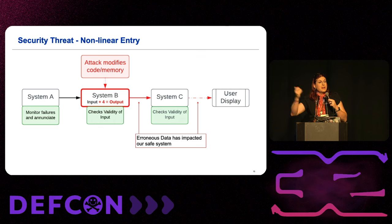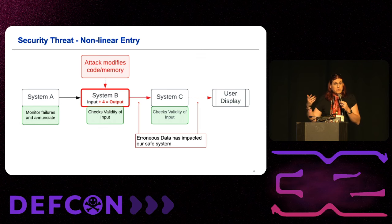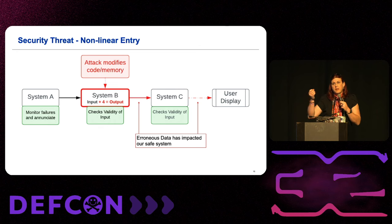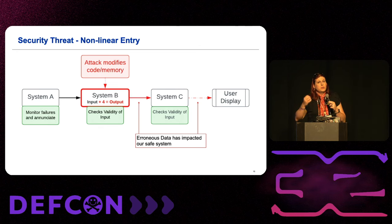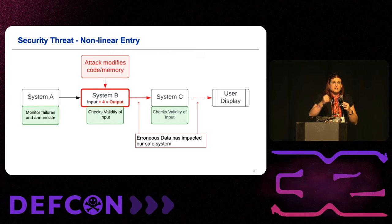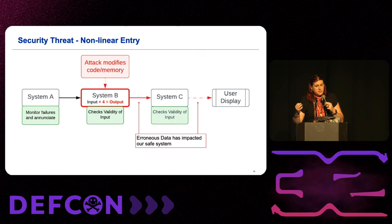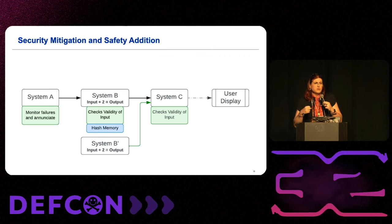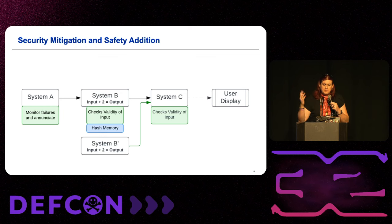Now we look at a threat. We have an attack that modifies code or memory and changes a two to a four. There's erroneous data now flowing through the system — this is the hazard effect we're looking at: how we can cause hazardously misleading data DAL B impacts. We're going to hash the memory spaces so that none of that changes. We'll put hashes in place so the values in memory spaces are hashed. We'll get back to why hashing was picked in the first place.